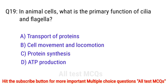Question number 19. In animal cells, what is the primary function of cilia and flagella? The right answer is option B: cell movement and locomotion.